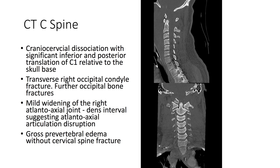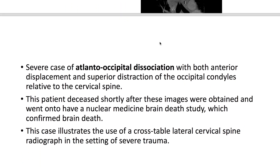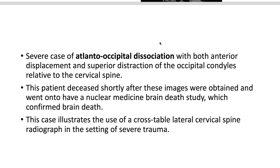There is mild widening of the right atlanto-axial joint dense interval, suggesting atlanto-axial articulation disruption, and gross prevertebral edema without cervical spine fracture. This is a case of severe atlanto-occipital dissociation with both anterior displacement and superior distraction of the occipital condyles relative to the cervical spine.